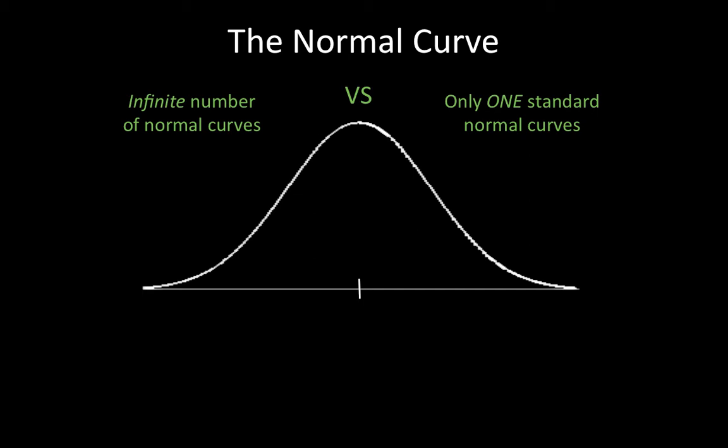First, let's talk about the properties of a normal curve, which are the same properties for a standard normal curve. The first property is that the distribution is symmetric around the mean. The mean is in the middle and the distribution is symmetric around that. So the distribution has one peak and is bell-shaped.